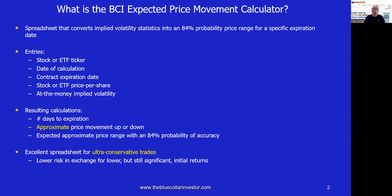First, the ticker symbol of the stock or exchange-traded fund. Then, the date of the calculation. Next, the contract expiration date. Next, the price per share. And finally, most option chains also have implied volatility stats, and we tend to use the at-the-money IV for the specific contract we're looking at.